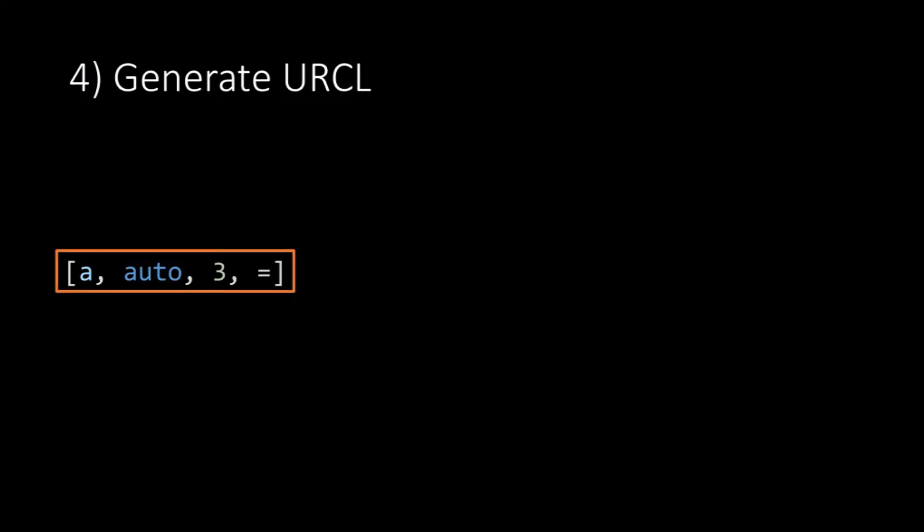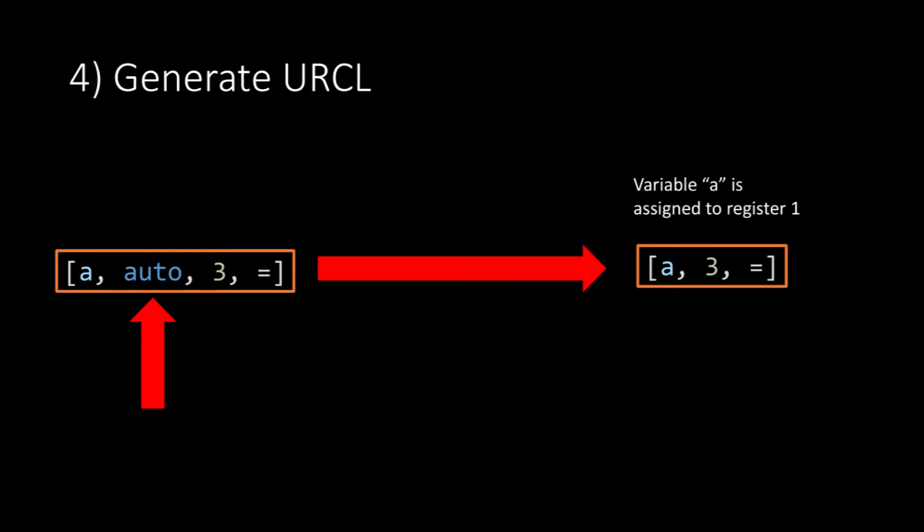If we look at a small snippet of code, which is simply auto a equals 3, we can apply our algorithm. First we start with the a, and a is a variable, so we skip to the next token. The next token is auto. Auto will define the previous token, which is a, as a variable. This variable is assigned to register 1, since that's the first available location, and the auto token is deleted from the list. This gives us a new list of tokens.